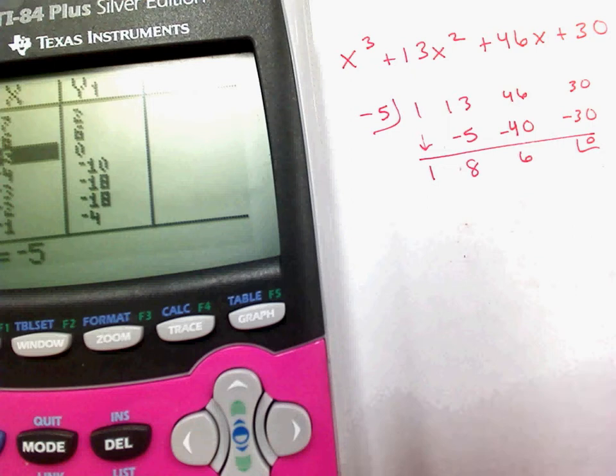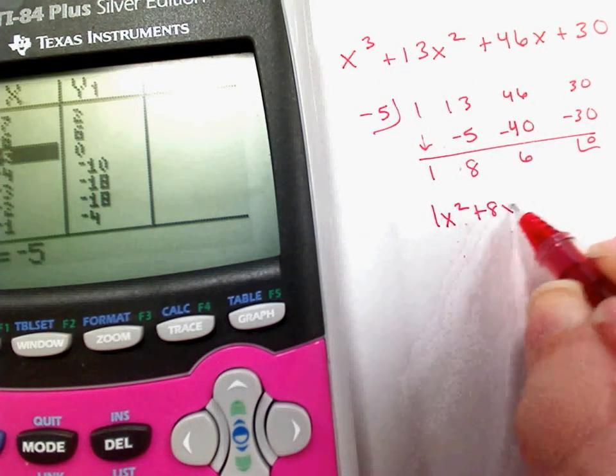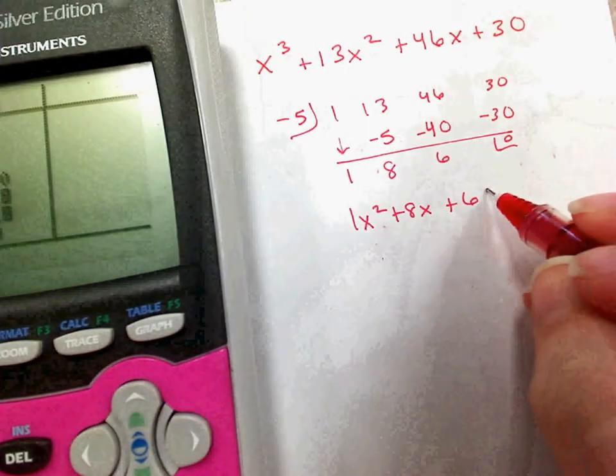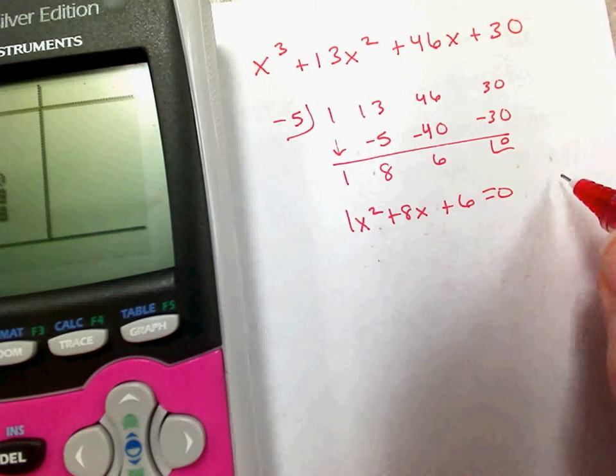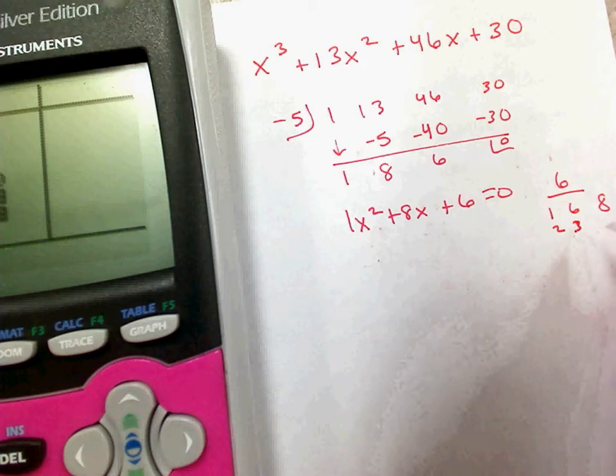Okay, now I started with the cubic. This is a quadratic. 1x squared plus 8x plus 6. Now, it would be nice if this factored, because I need to solve for when this equals 0. But there are not factors of 6 that add up to the middle term 8. 1 and 6, 2 and 3. Doesn't work.